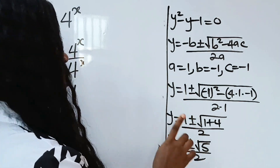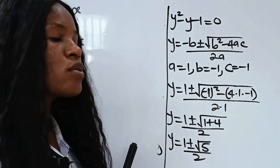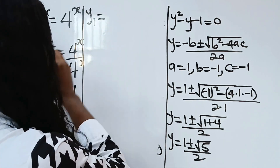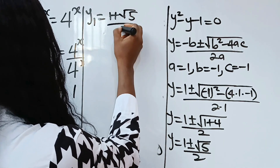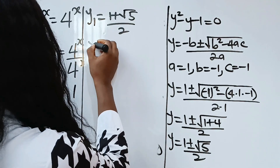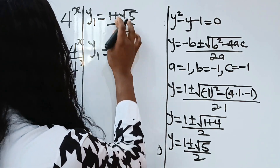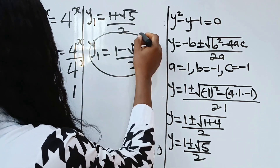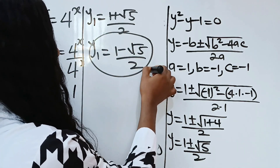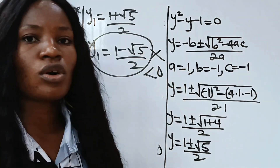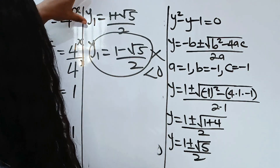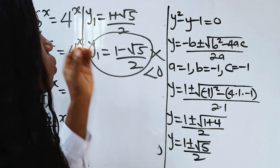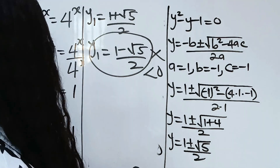So y equals 1 plus or minus square root of 5, divided by 2. The first value of y is 1 plus square root of 5, divided by 2. The second value is 1 minus square root of 5, divided by 2. But when we solve the second one, we get a number less than 0, so it is not valid. We go on with the first value: y equals 1 plus square root of 5, divided by 2.